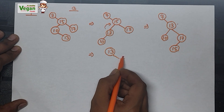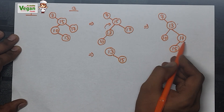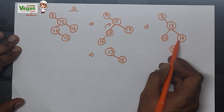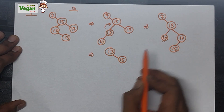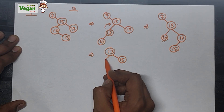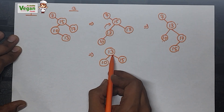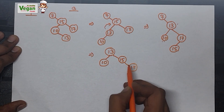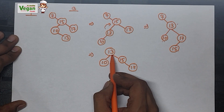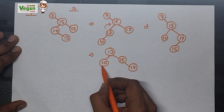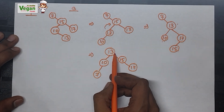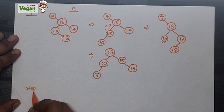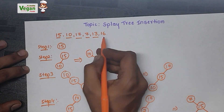13 becomes root. Compare all elements from downside to upside. First consider 15: 15 is greater than 13, right side. Then 10 and 17 - same level means go left first then right. 10 is less than 13, so left side. 17 is greater than 13 and greater than 15, so right side of 15. Only 7 left: 7 is less than 13 and less than 10, so left side of 10. We made newly inserted 13 the root value.